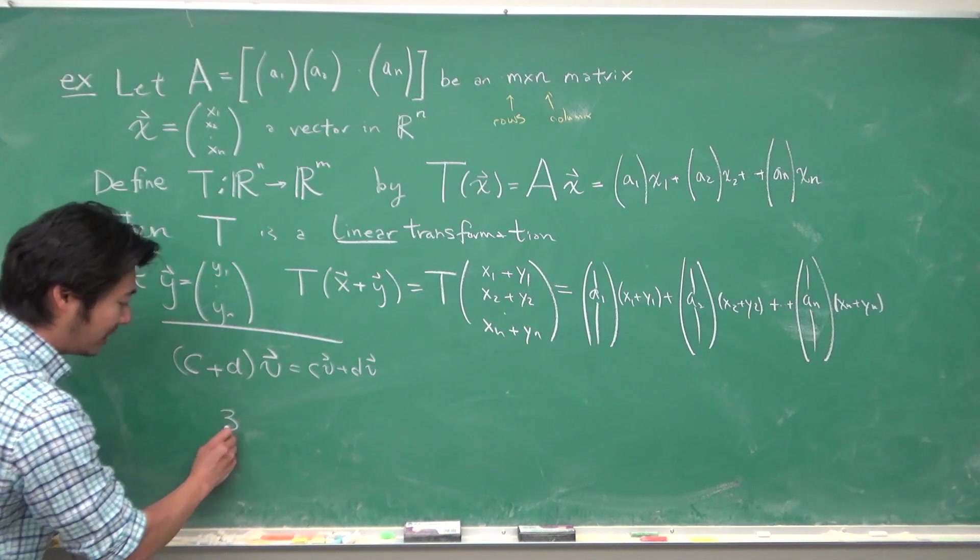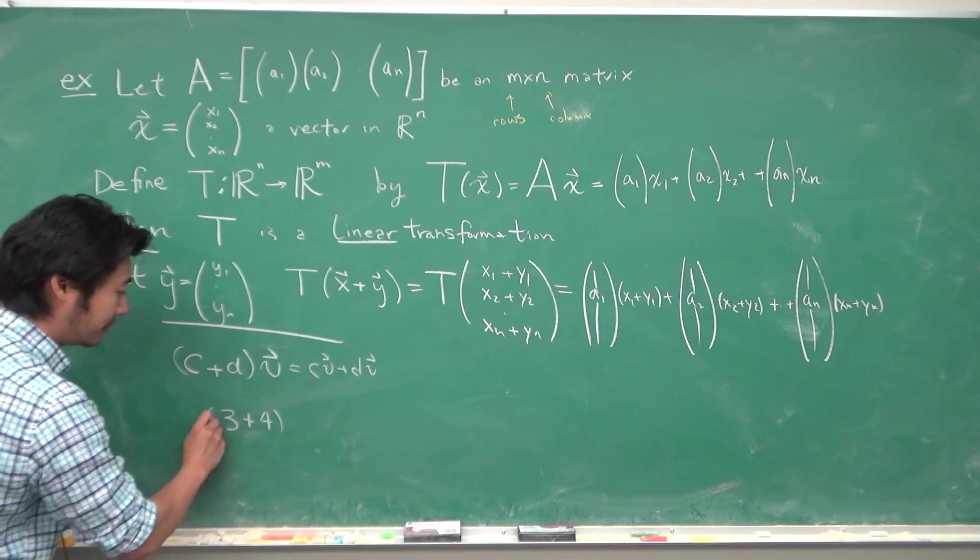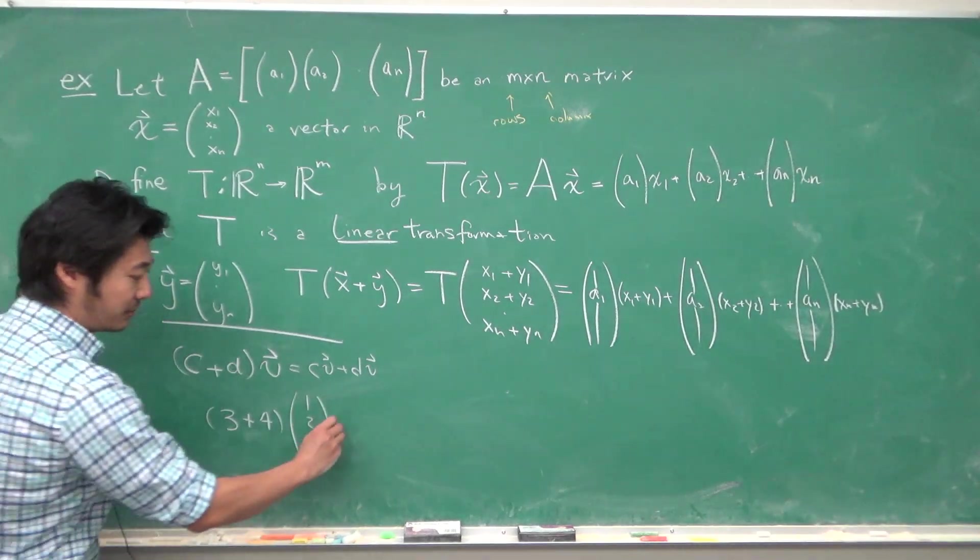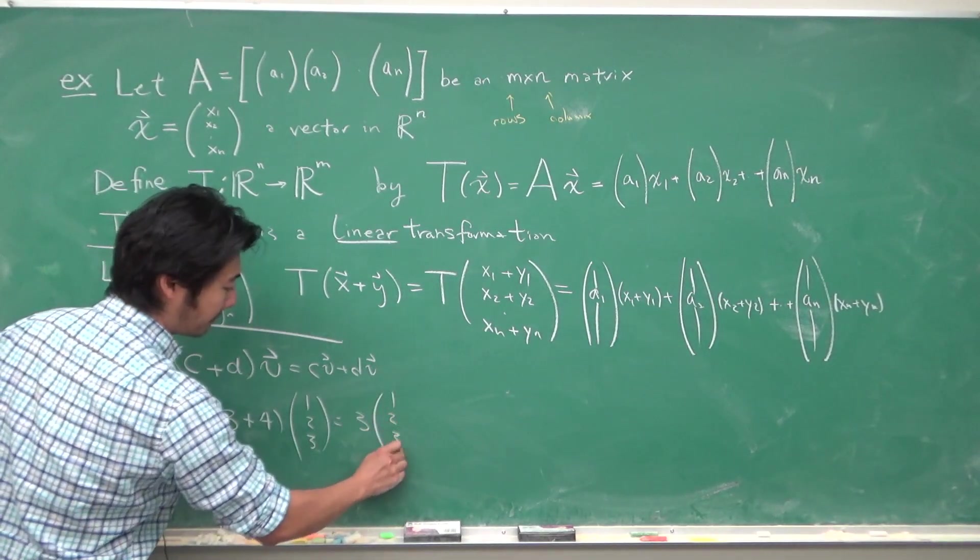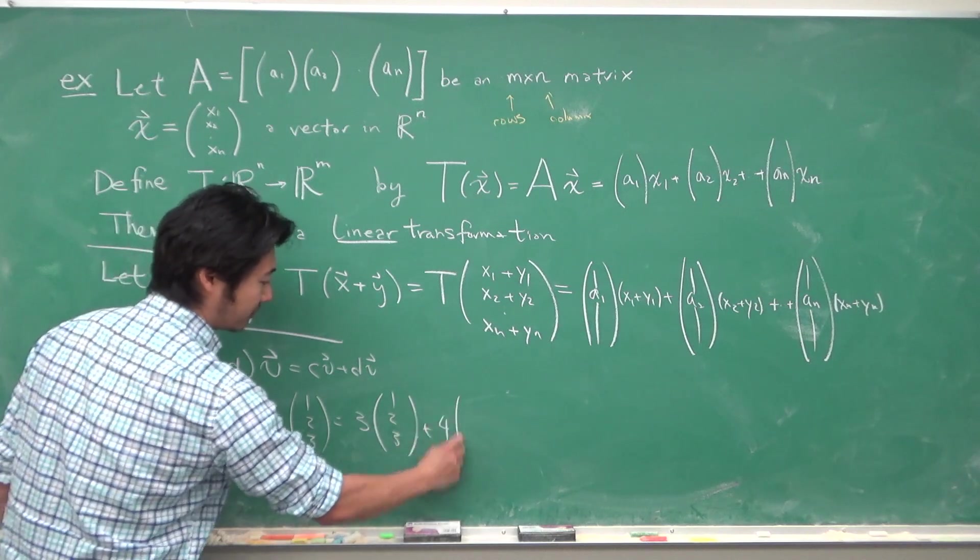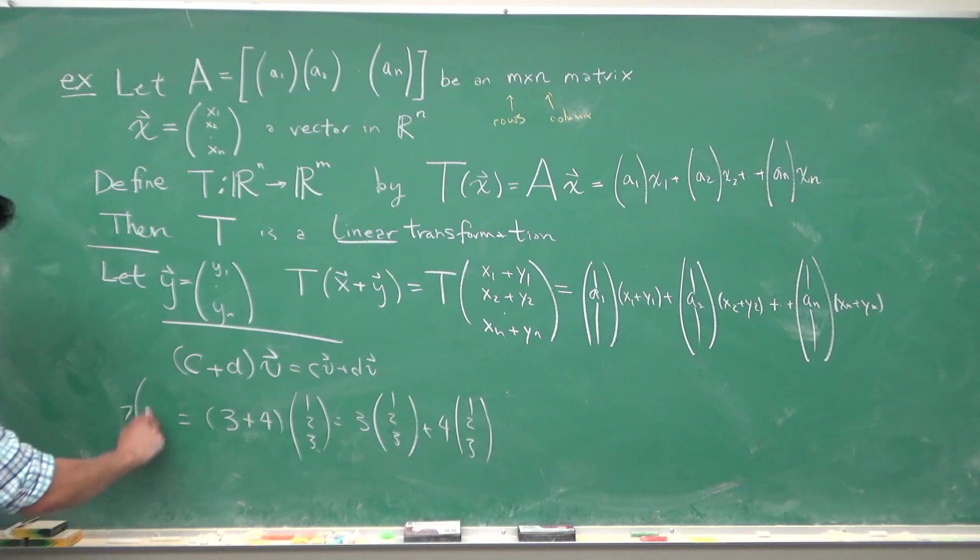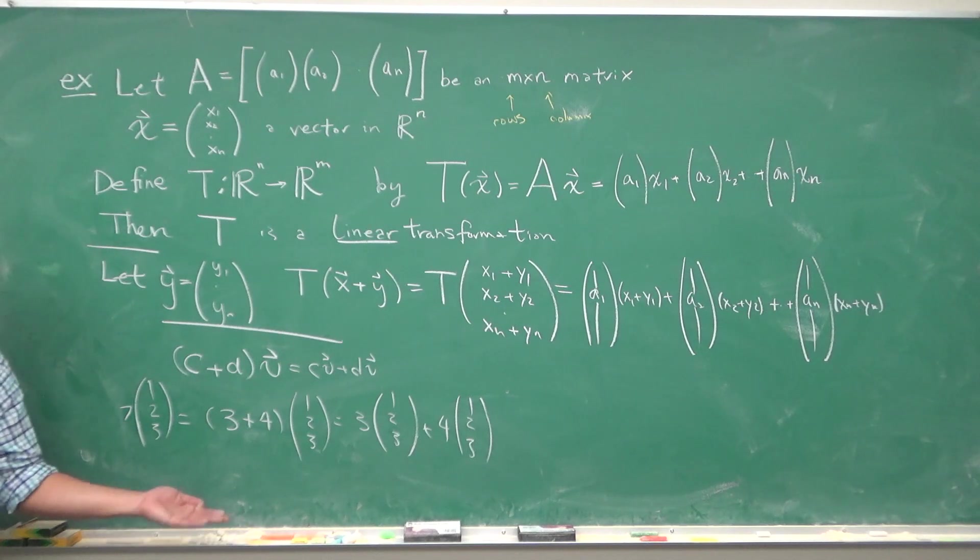For a more concrete example, let's say (3+4) times the vector (1,2,3) would just be 3 times (1,2,3) plus 4 times (1,2,3). And on this side, this would be 7 times (1,2,3). If you multiply on both sides, you'll see that they're equal.